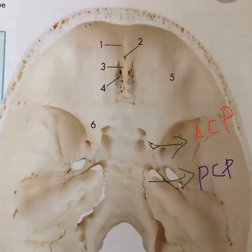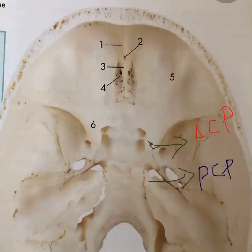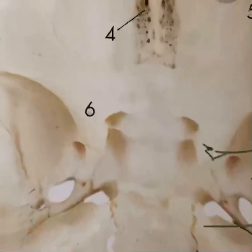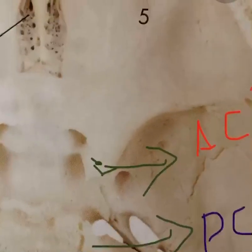This is a short video about Tentorium Cerebelli. Tentorium Cerebelli is a dural fold, and the most important thing is it has an attached margin and a free margin. Before going to that, there are a few important bony landmarks you should understand, and only then we can talk about the attached margin and free margin of Tentorium Cerebelli.